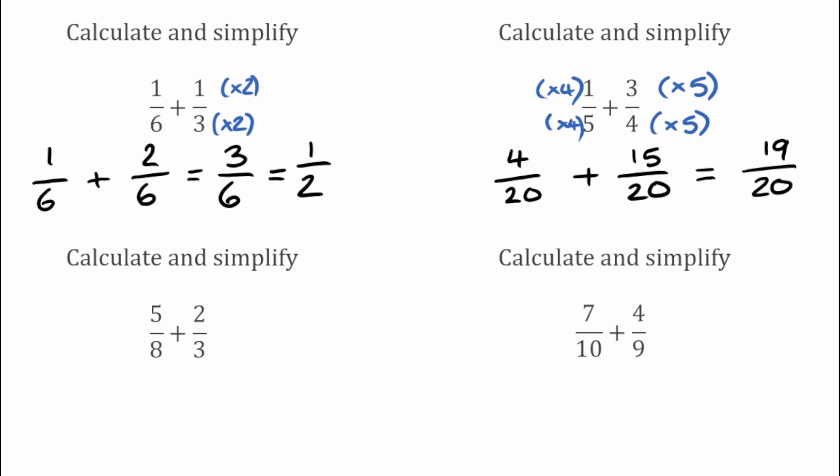For our next example we've got 5 over 8 add 2 over 3. Looking for the lowest common multiple of 8 and 3, that would be 24, so we're going to have two fractions that are both over 24 this time.